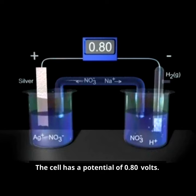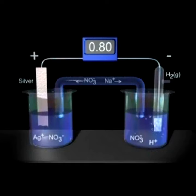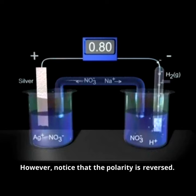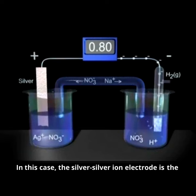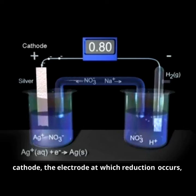The cell has a potential of 0.80 volts. However, notice that the polarity is reversed. In this case, the silver-silver ion electrode is the cathode, the electrode at which reduction occurs.